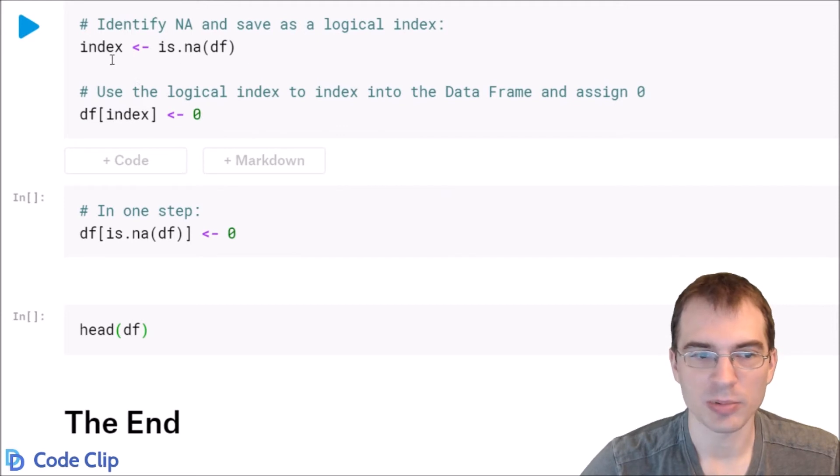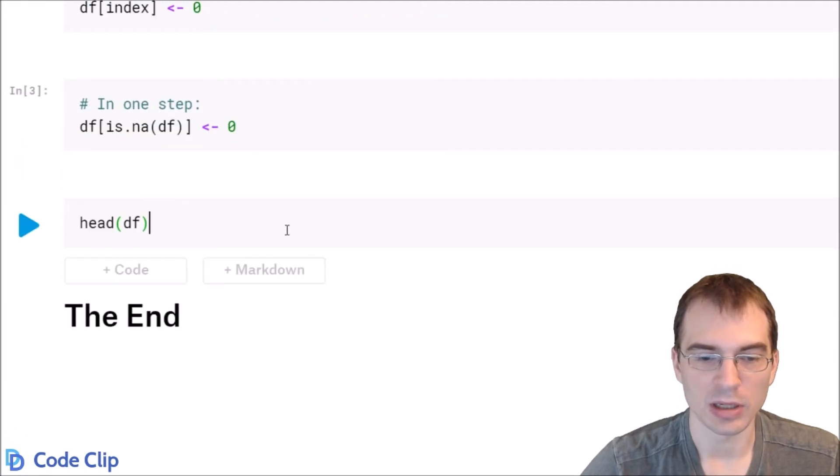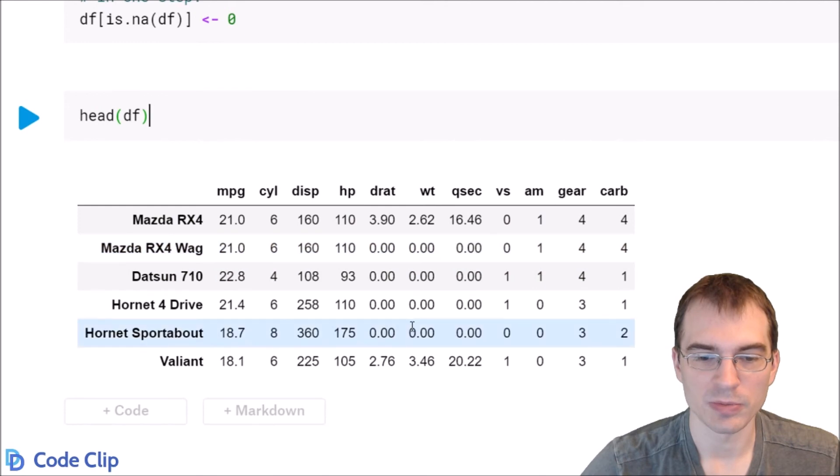You can do this in one step without first saving an index and using it, so this would be the quicker way of doing it. And now we can see that those 12 NA values have been filled by zero.